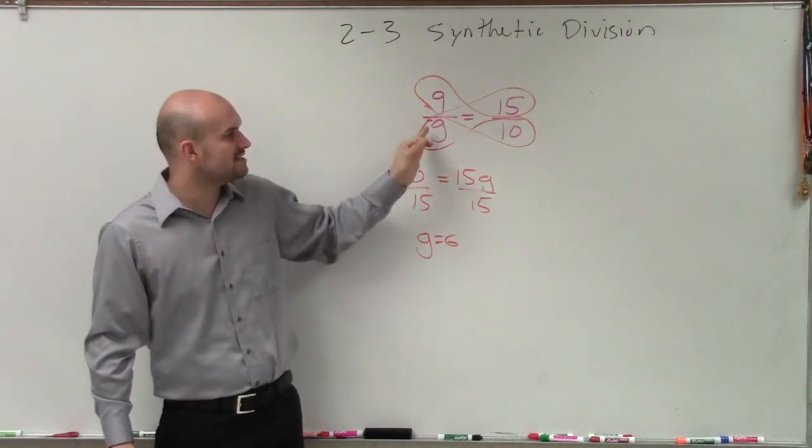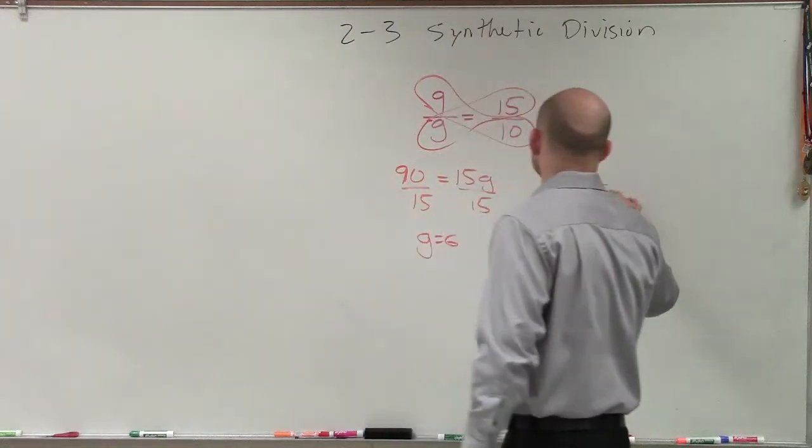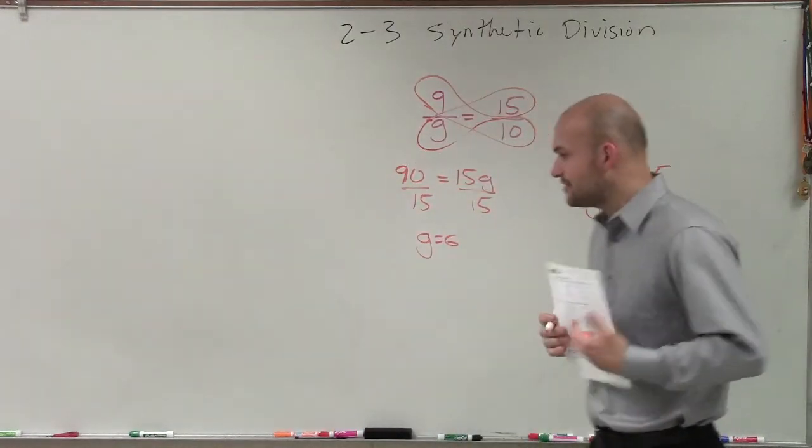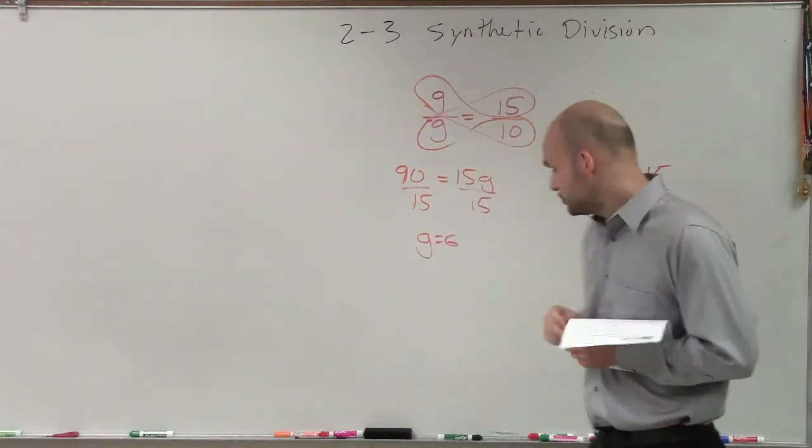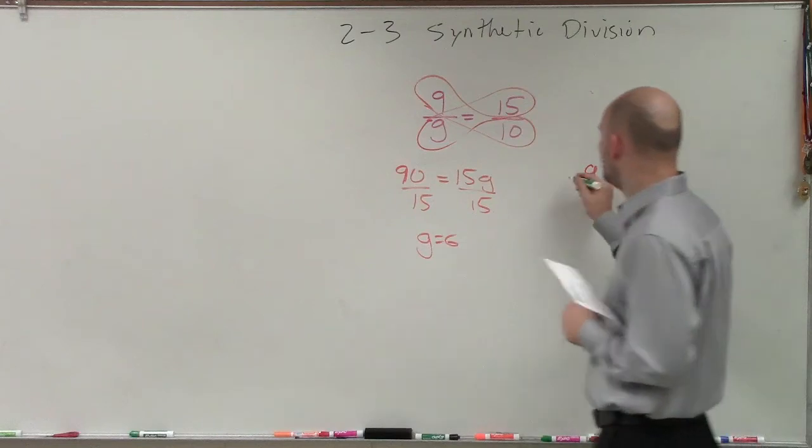So another way that you guys can do this is multiply by g on both sides. So if you had 9 over g, and this works whenever you have a variable on the denominator. We need to get that variable off the denominator. So to do that, what I can do is multiply by g on both sides.